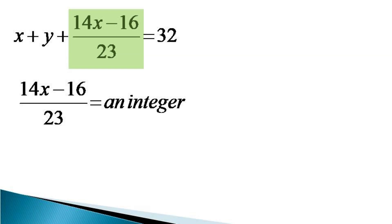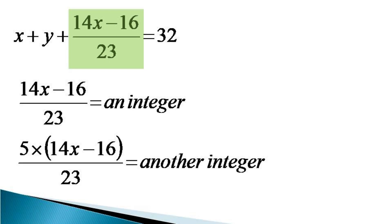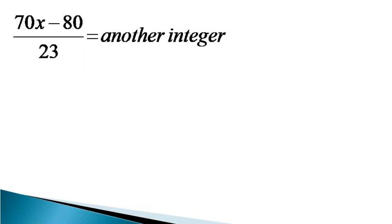So we multiply both sides with an integer so as when the coefficient of x is divided by 23 we get a remainder of 1. We find that 5 is such a number when multiplied with this expression we get another integer. So 5 into 14x minus 16 by 23 becomes another integer and the multiplication on the left hand side gives 70x minus 80 by 23. 70x when divided by 23 gives remainder as 1. So this expression becomes 3x minus 3 plus x minus 11 by 23 is equal to another integer.